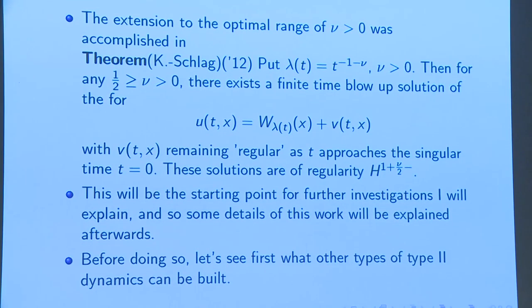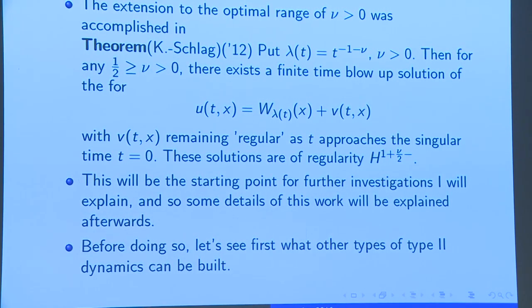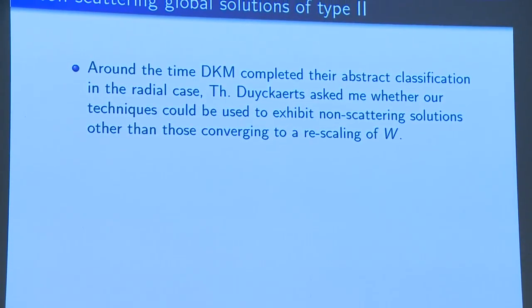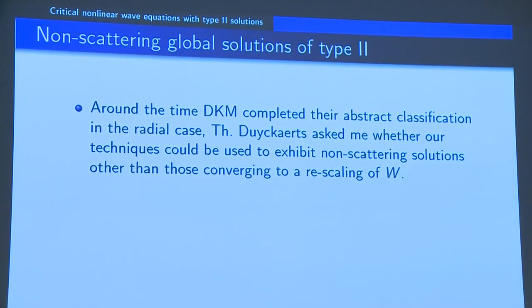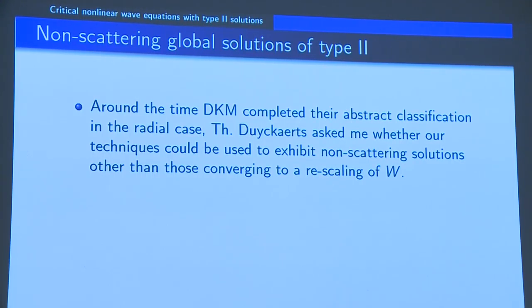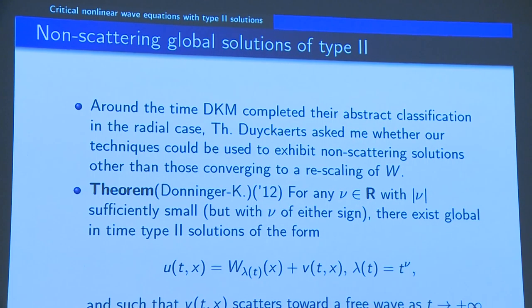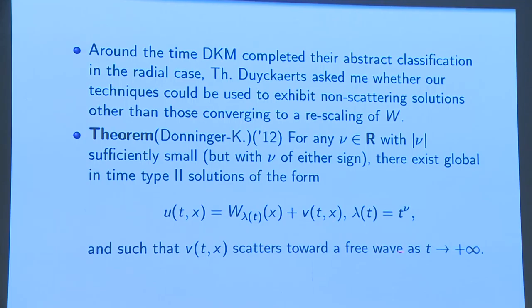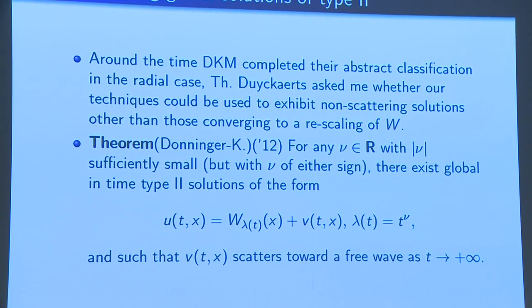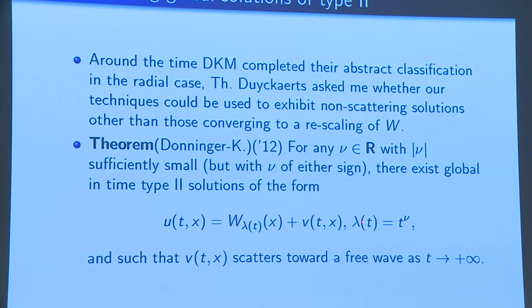More type 2 dynamics have actually been built. On the one hand, something I very much liked: I was visiting Paris and ran into Thomas Duyckaerts, and at the time they were completing the infinite-time case of the characterization of type 2 solutions — ones existing all the way up to time infinity. A result by Donninger and myself showed that indeed there is again a continuum of such solutions. These solutions exist all the way to time infinity, and the scaling parameter is t^ν. ν just has to be small enough in absolute value — it can be negative or positive.